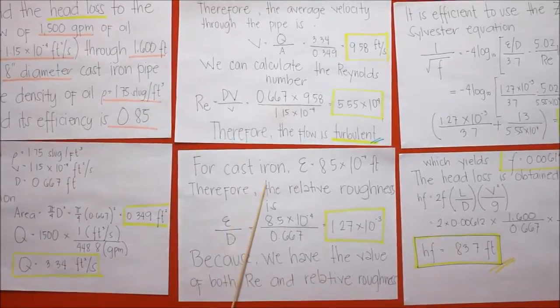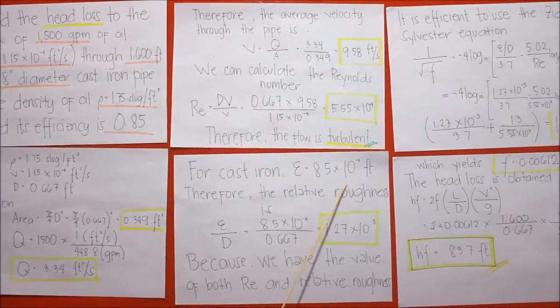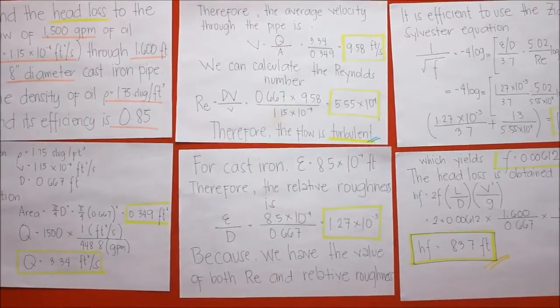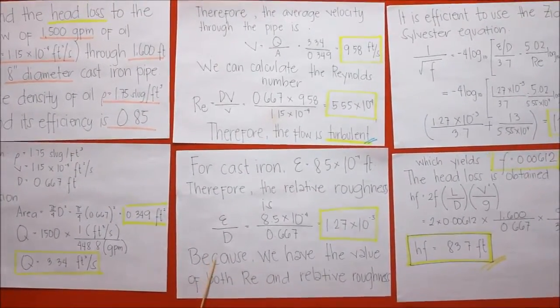For cast iron, the efficiency is 8.5 times 10 to the power of negative 4 feet. Therefore, the relative roughness is E over D.